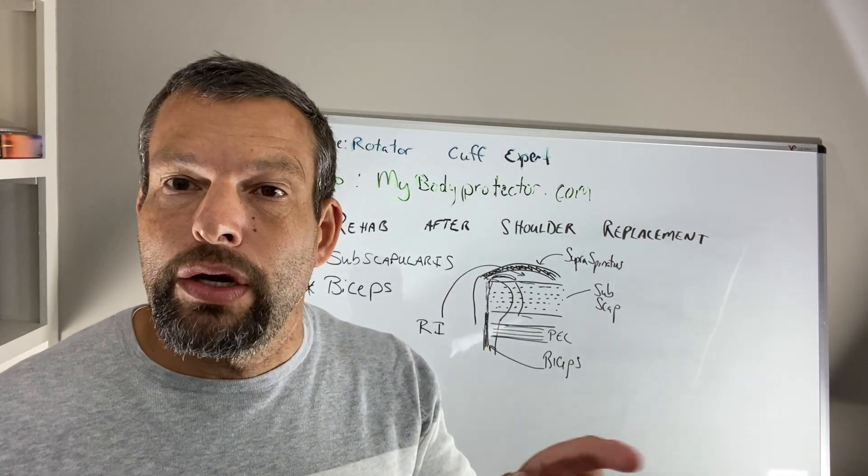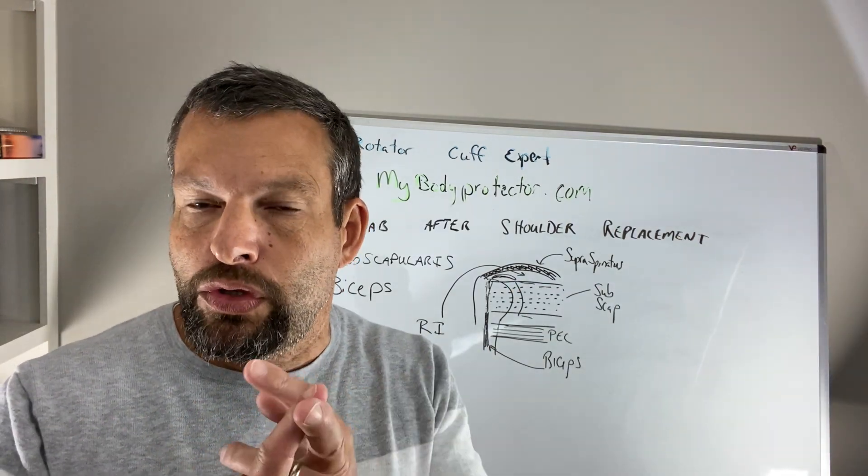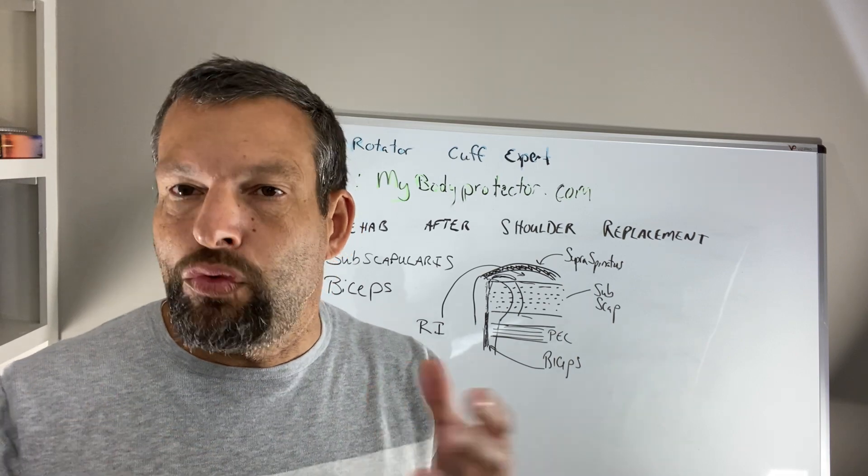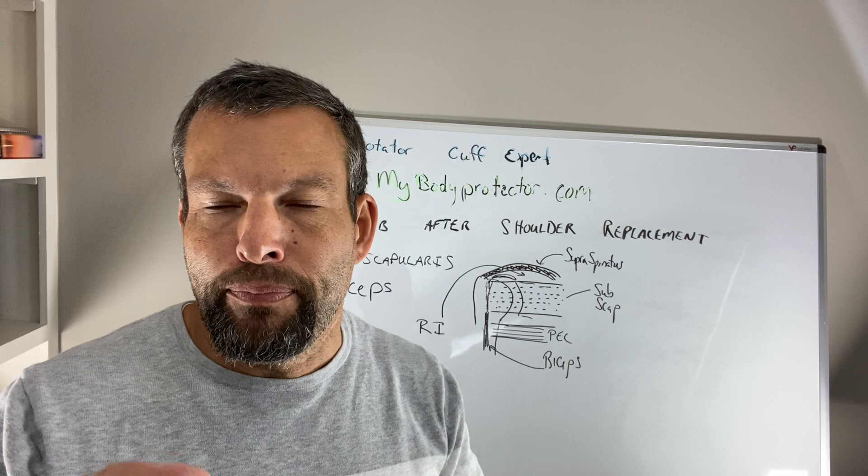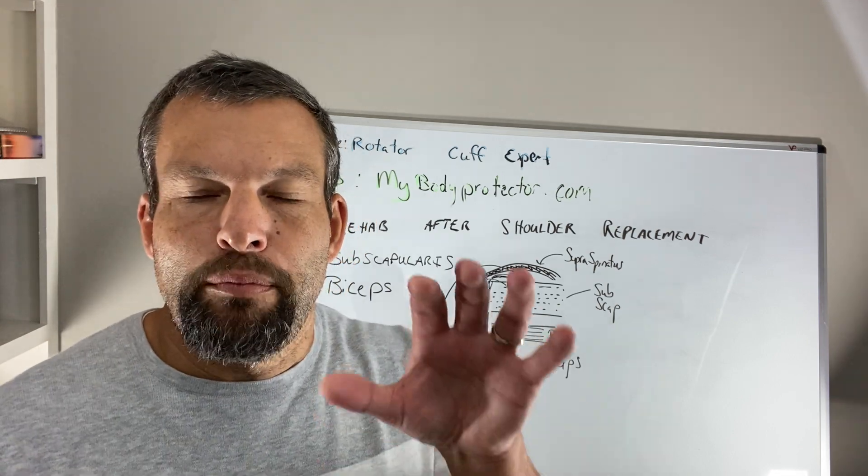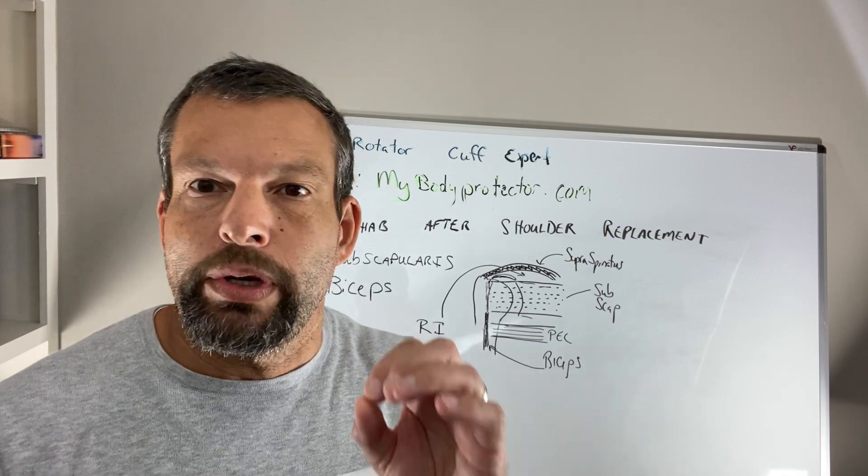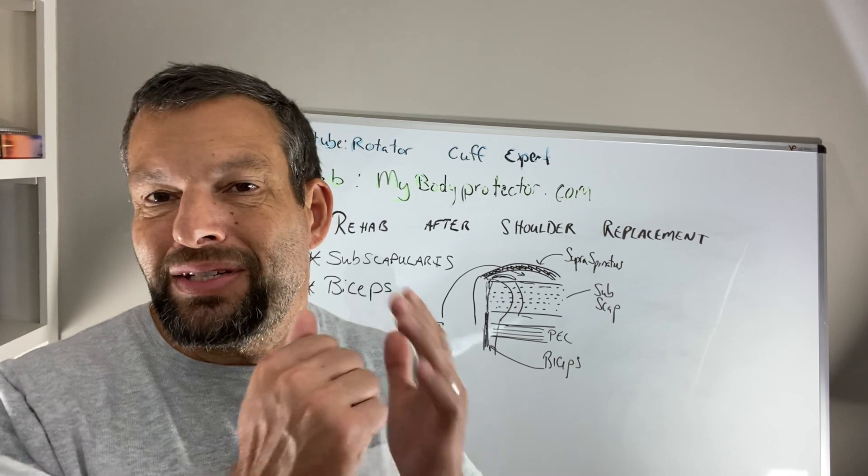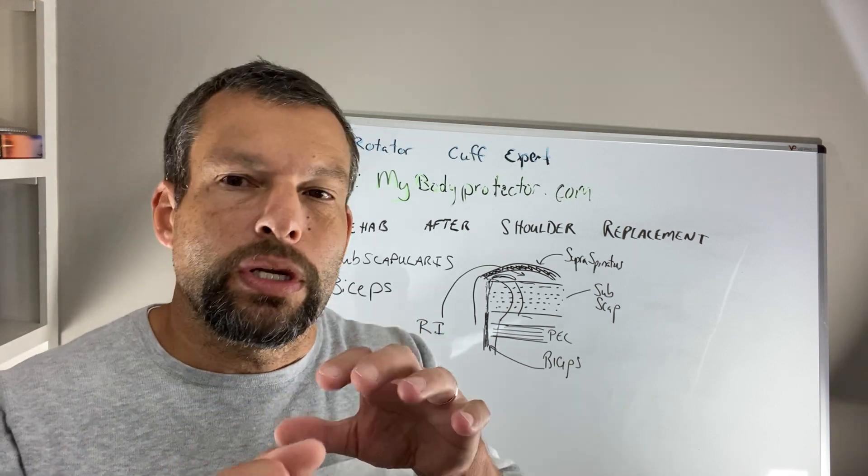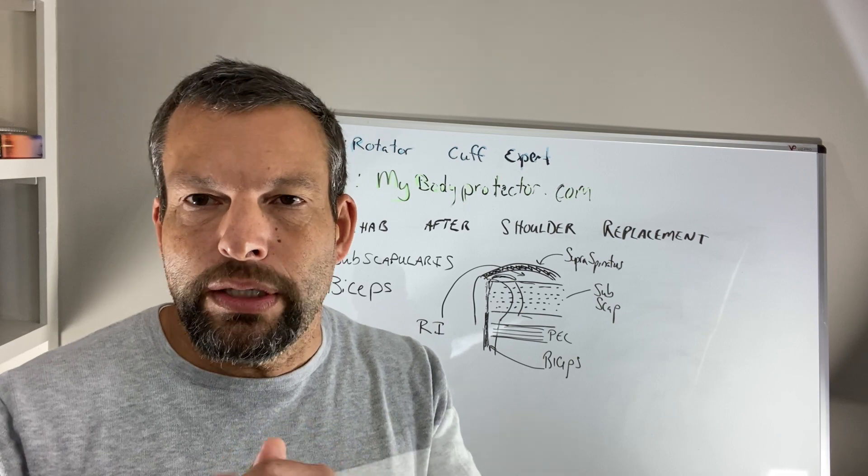Now there's another video and we'll link to it that does talk about shoulder replacement and reverse total shoulder replacement and why you might do one or the other. So we'll link to that in the descriptions here but we're talking about shoulder replacement that's what we call an anatomic shoulder replacement. The subscapularis has to be there. Reverse total shoulder subscapularis doesn't necessarily have to be there but we usually still try and repair it because it probably makes the reverse total shoulder function a little bit better.